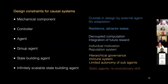Looking at design constraints: a mechanical component needs an outside-in design by some external agent — it will not exist or adapt by itself. When you build a controller, it gains resilience larger than the mechanical component, because it can adapt its states to slightly changing environmental circumstances and maintain an attractor state via dynamic control. If your controller is able to model the future via decoupled computation, it can integrate future reward — not just adapting itself to the environment, but also adapting the environment to itself.